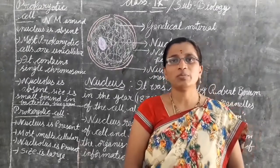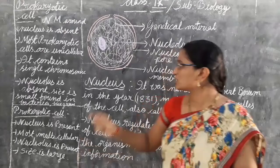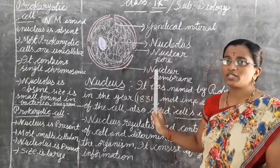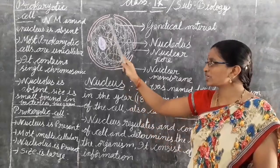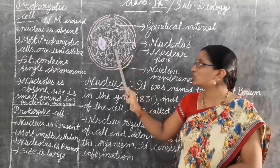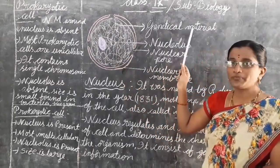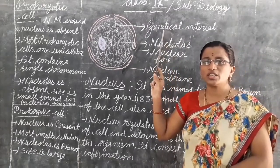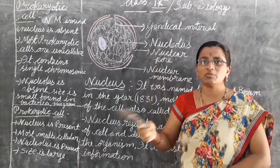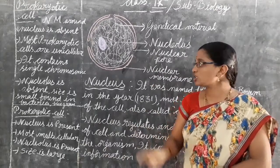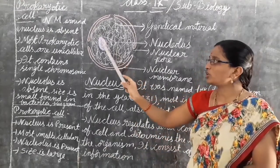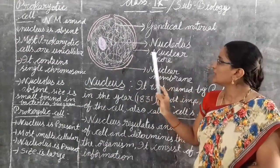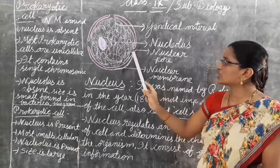Today's video we will learn about the structure of the nucleus — the important parts present in the nucleus. A thread-like structure is present called genetic material. Through this genetic material, genetic information from parents is transferred to their offspring. A round structure is also present, called the nucleolus.